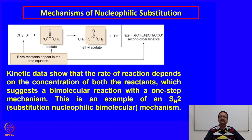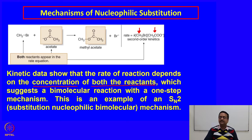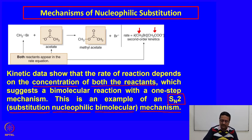When trying to understand these reactions, we first determine the reaction rate by following the concentrations of the alkyl halide and the nucleophile. The kinetic data show that when the rate depends on both reactants, it suggests a bimolecular one-step mechanism — this is the SN2 mechanism, which stands for substitution nucleophilic bimolecular. S stands for substitution, N for nucleophilic, and 2 means it is a bimolecular process.